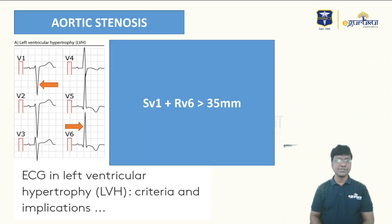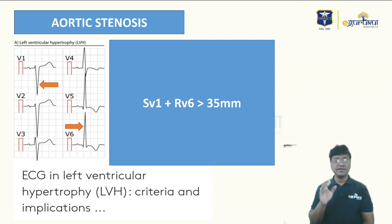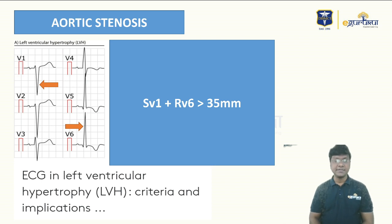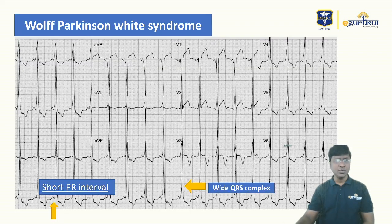Regarding aortic stenosis — can a 14-year-old female have it? Yes, due to a bicuspid aortic valve. Patients with aortic stenosis develop left ventricular hypertrophy, so ECG changes show features of LVH — concentric hypertrophy. Using the Sokolov-Leon criteria, if the amplitude of the S wave in V1 plus the R wave in V6 is more than 35 mm, that is suggestive of left ventricular hypertrophy.